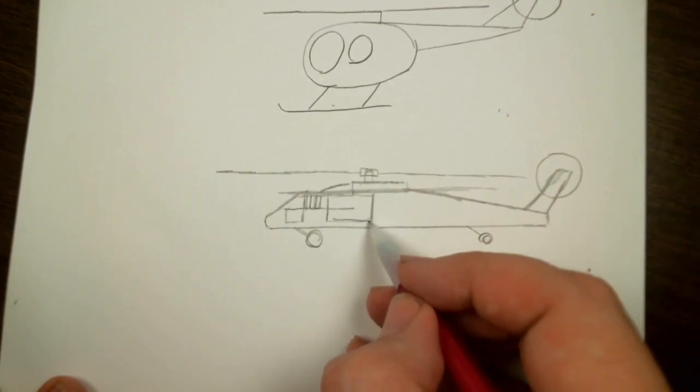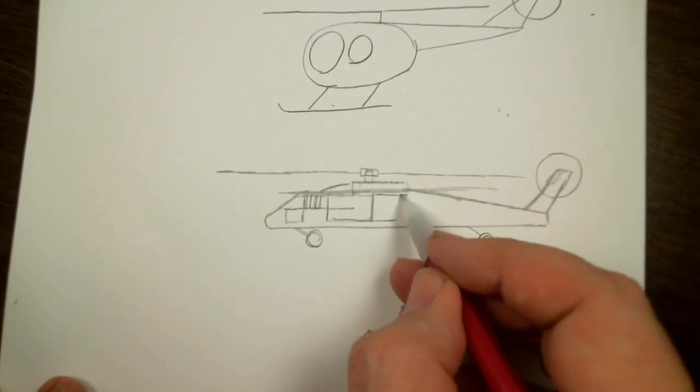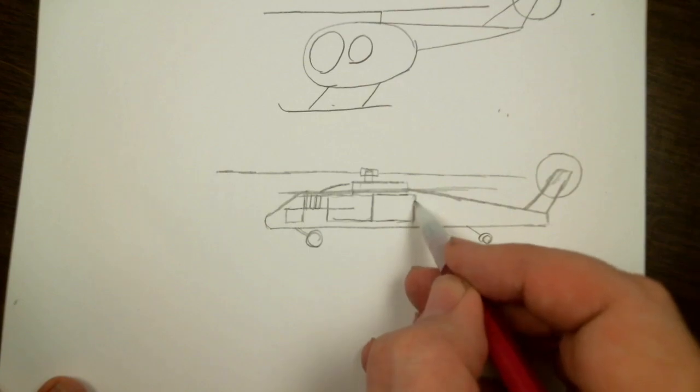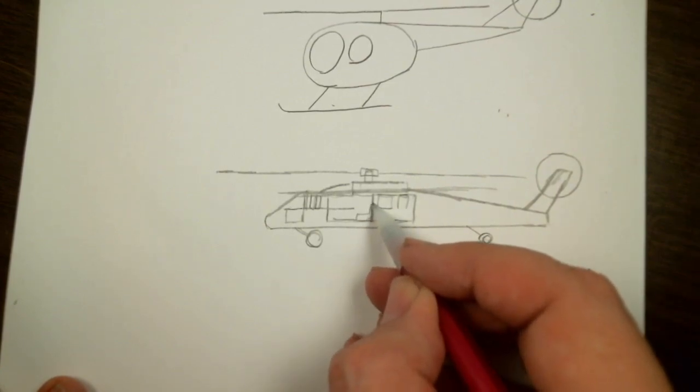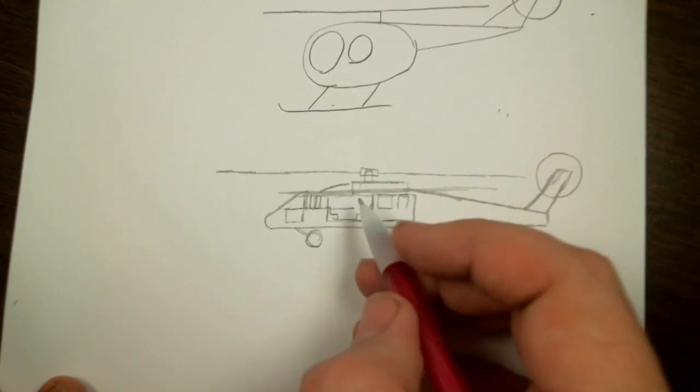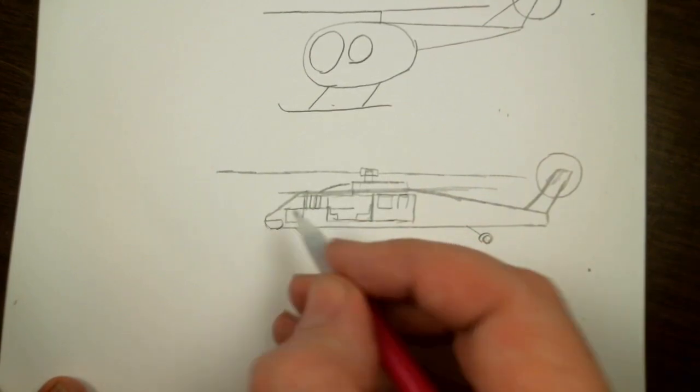We're going to make this door open. So we're going to draw another one of these back here. Like the door is slid open. And put some windows on it. And then here we can put a couple of seats. Put another window right there.